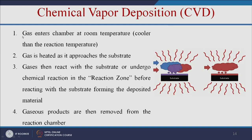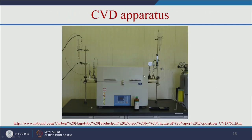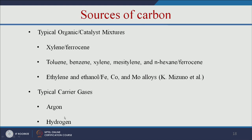In CVD, gas enters the chamber at room temperature — cooler than the reaction temperature — and is heated as it approaches the substrate. The gas reacts with the substrate or undergoes chemical reactions in the reaction zone, forming the deposited material. Gaseous products are then removed from the reaction chamber. The carbon source usually comes from an organic compound mixed with a metal catalyst and inert gas, atomized and spread into a reactor at 600 to 1200°C. Pyrolysis deposits carbon and carbon nanotubes on the reactor wall. Typical carbon sources are xylene or ferrocene; typical carrier gases are argon and hydrogen.